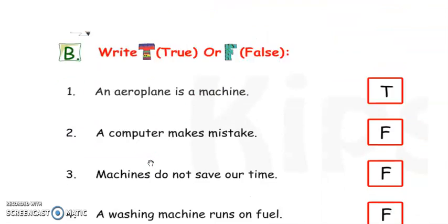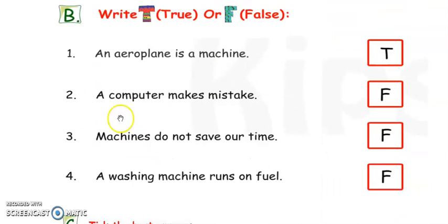Now, next. Exercise number B. Write True, T for True or F for False. It is right. It is wrong.